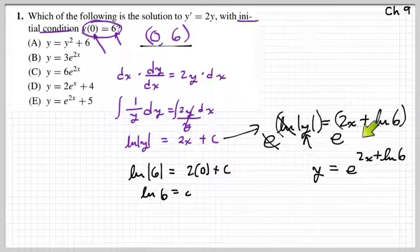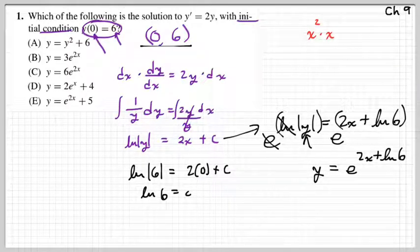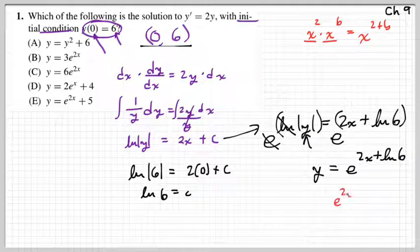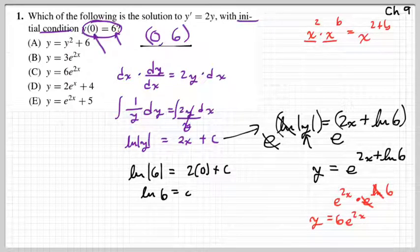So we have y equals e to the (2x + natural log of 6). Since the exponent has addition inside, we can split it: e^(2x) times e^(natural log of 6). The e and the natural log cancel, leaving 6. So y equals 6e^(2x). That one's done!